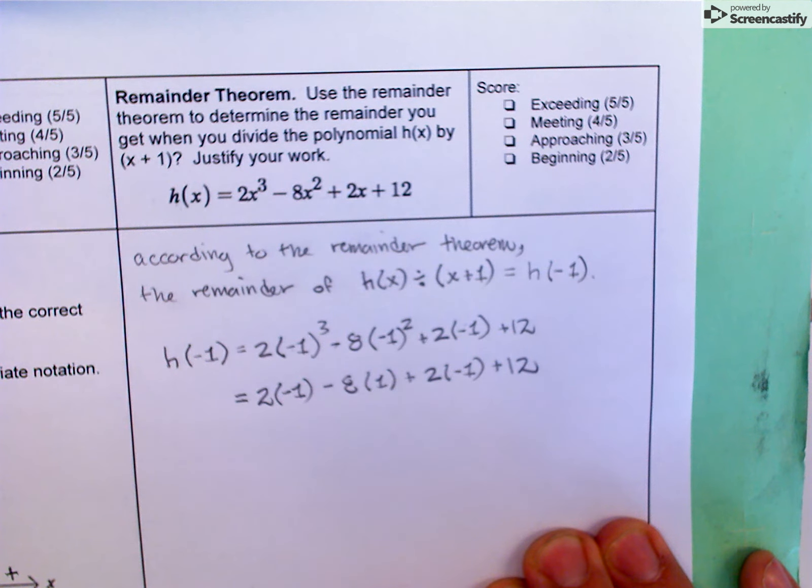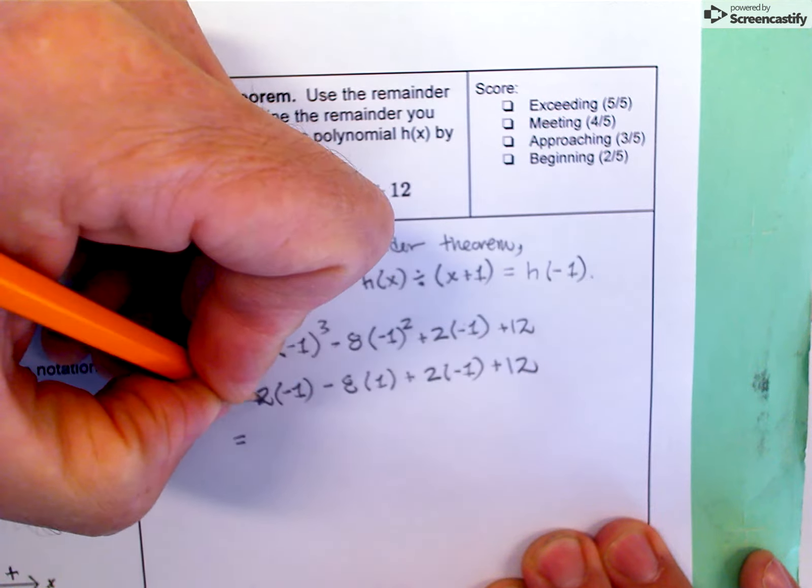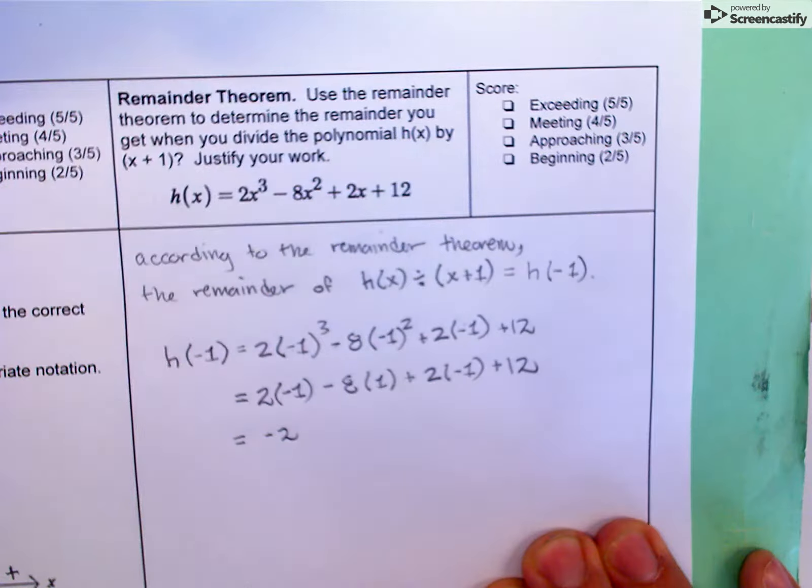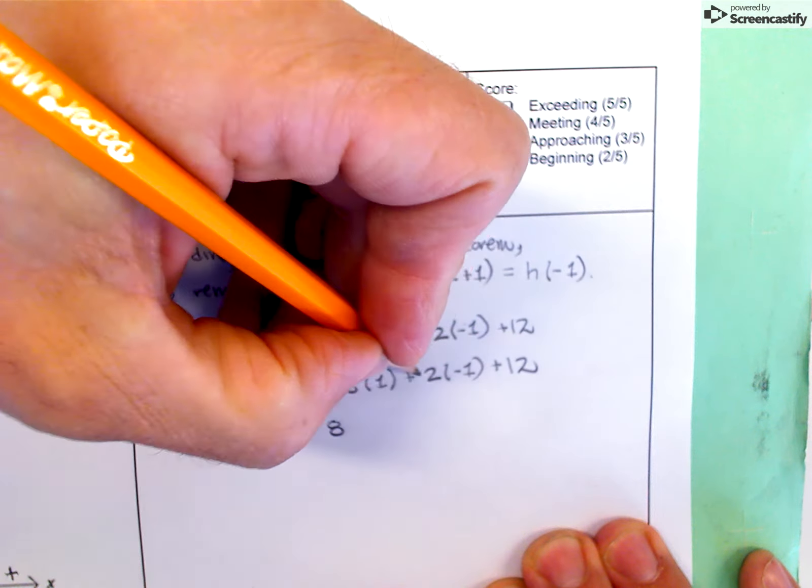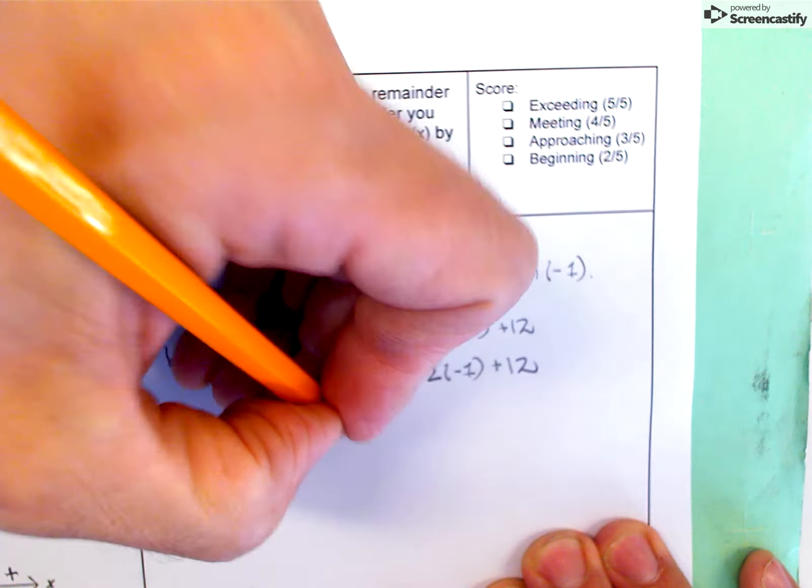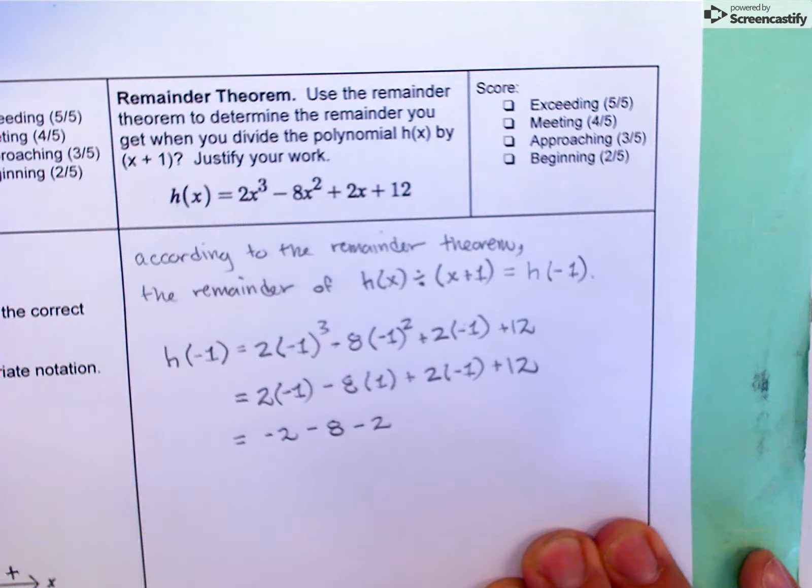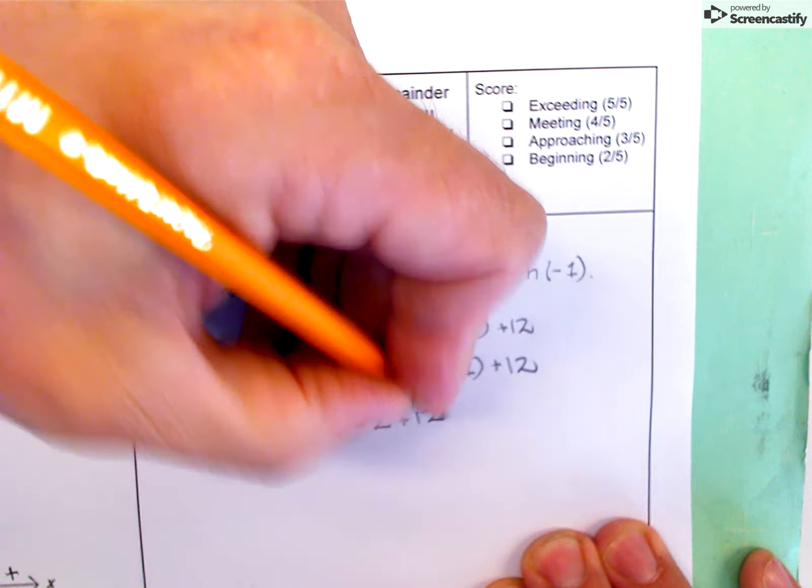Now we're going to multiply and divide from left to right. We don't have any division, just multiplication. So this is 2 times -1, which is -2, minus 8 times 1. Then this will be 2 times -1, so I'll be adding a -2. I'm going to write -2 plus 12.